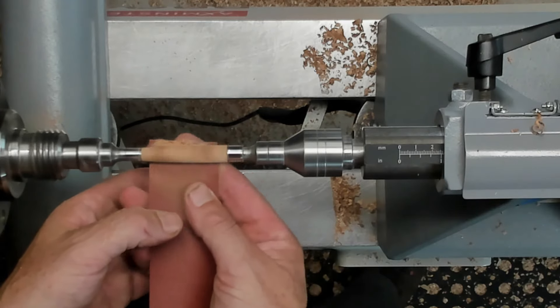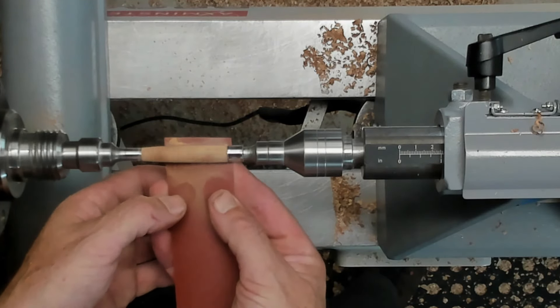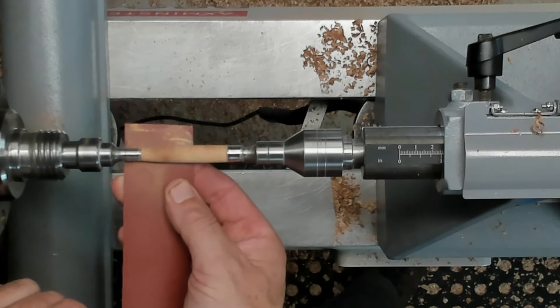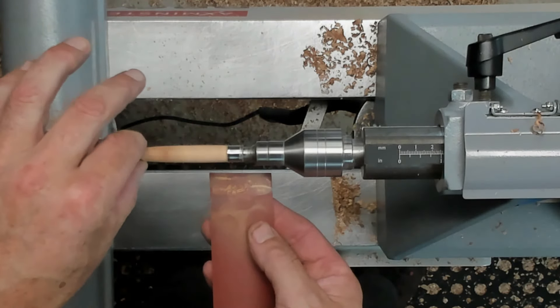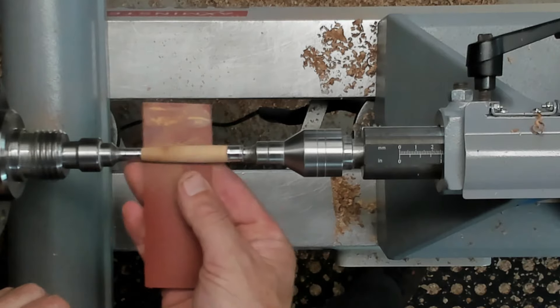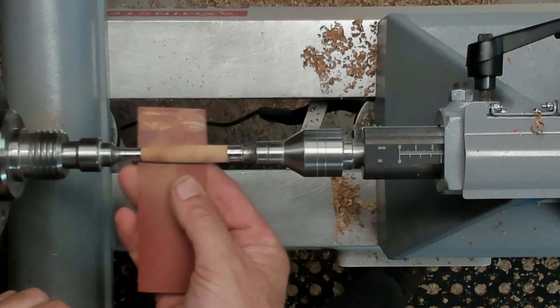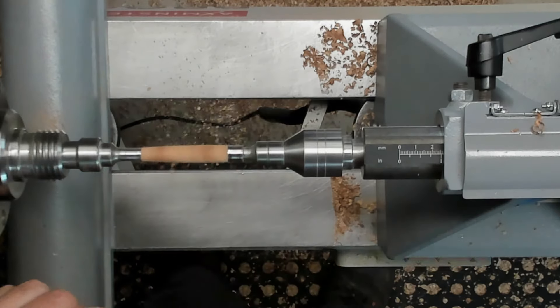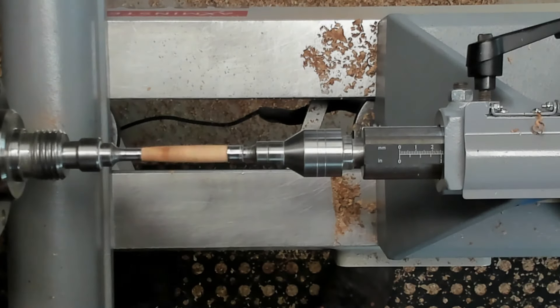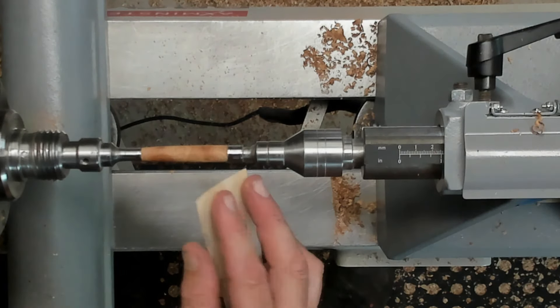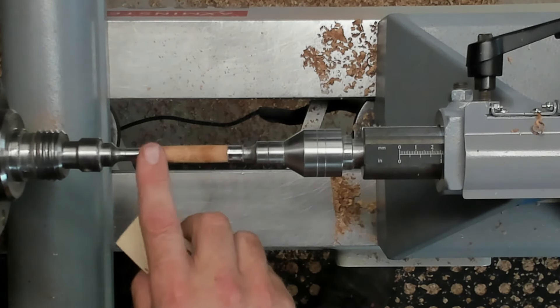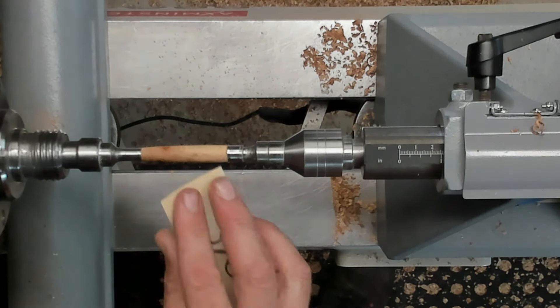I've just freshly sharpened the skew so I'll just give it a little tiny scrape. Stop and check. There's a tiny little lip just here I can feel it on my nail, this side is perfect. I'm just taking a little tiny bit off.